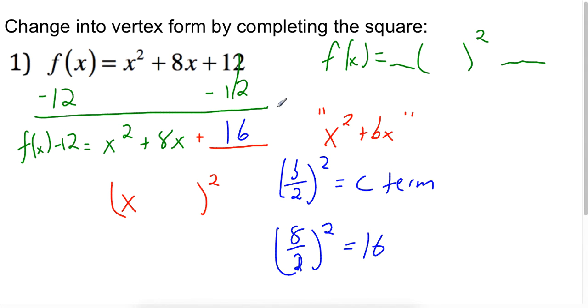So 16 is going to be what my missing c term is. Now, I can't just add numbers all willy-nilly to my polynomial. So I need to make sure I add 16 on the left-hand side of this as well to keep it balanced.